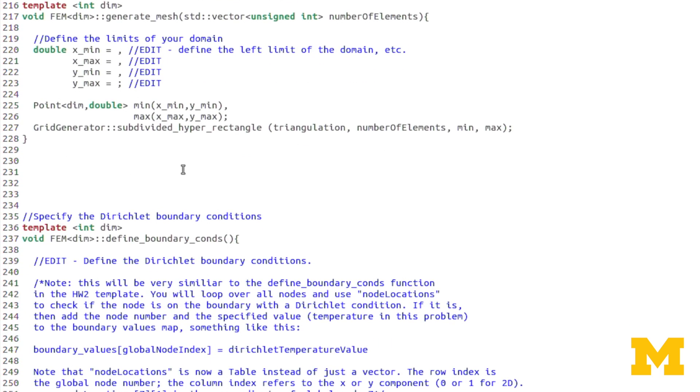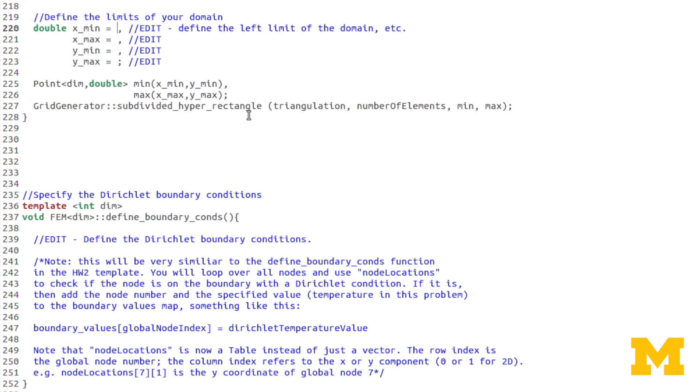So moving on to generate mesh. Again, it's very simple. There's not much for you to do. You just have to define the limits of your domain. The left and right and top and bottom. So xmin, xmax, ymin, ymax. And again, we'll use deal 2's functions to create that mesh. So not a lot for you to edit there.